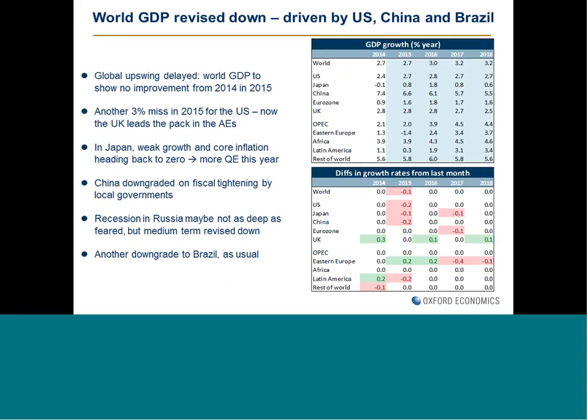Getting started with our global GDP — this table presents a preview of our GDP growth forecast for the world and some key countries, along with differences in growth rates relative to last month. This year, we forecast that the global upswing will be delayed by one year, so GDP growth will remain stable at the 2.7% we saw last year in 2015. The reasons include a 0.2 percentage point downgrade to the U.S., 0.1 in Japan, 0.2 in China, and Brazil also got downgraded by 0.2.